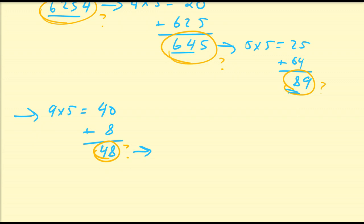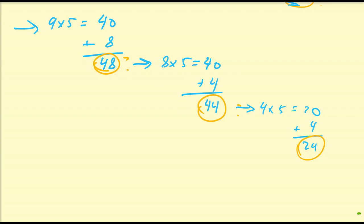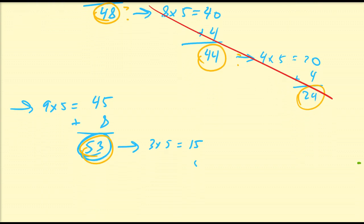Let's grab the last digit, which is 8. So 8 times 5 is 40. Add to it the remaining digit 4: 40 plus 4 is 44. Is 44 divisible by 7? Let's continue. 4 times 5 is 20; add 4 to that, giving 24. You may notice there was a minor miscalculation earlier — 9 times 5 is not equal to 40, it is equal to 45. So 45 plus 8 gives us 53, not 48. Is 53 divisible by 7? So we have 3 times 5, that's 15, and 15 plus 5 is equal to 20.